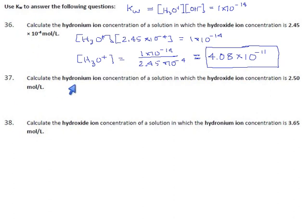Let's see. Again, they asked for hydronium concentration, and now the hydroxide is actually 2.5, so same formula. It's the same every time. The H3O, we don't know it, times the OH, they gave it to us, equals 1 times 10 to the minus 14.